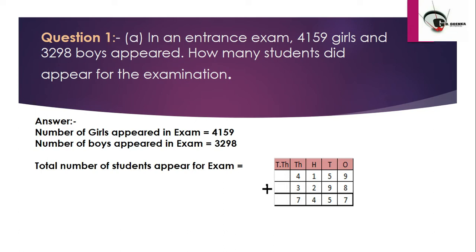We perform addition: 9 plus 8 is 17, write 7 carry 1. Then 5 plus 1 is 6, plus 9 is 15, write 5 carry 1. Then 1 plus 1 is 2, plus 2 is 4, plus 3 is 7. The answer is 7,457. I hope that is clear. Let us move to the next question.